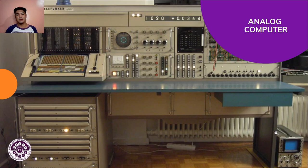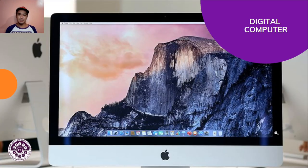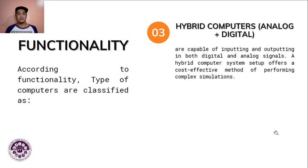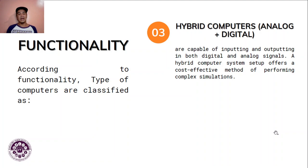This is an example of an analog computer called a Telephoniken — it fetches radio frequencies, like old school telephony. A Mac PC is a great example of a digital computer. Hybrid computers are a combination of analog and digital — they are capable of inputting and outputting in both digital and analog signals. A hybrid computer system offers a cost-effective method of performing complex operations. There are two types of signals: analog signals and digital signals.